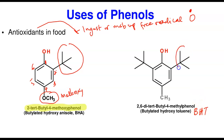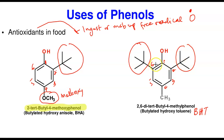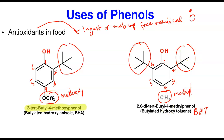For BHT, there are tert-butyl groups at both carbon two and carbon six, and a methyl group at carbon four — giving the systematic name 2,6-di-tert-butyl-4-methylphenol. Note that this has methyl, not methoxy. These two phenol derivatives are used as food additives because of their important roles as antioxidants. That brings us to the end of this lecture — thank you for listening.